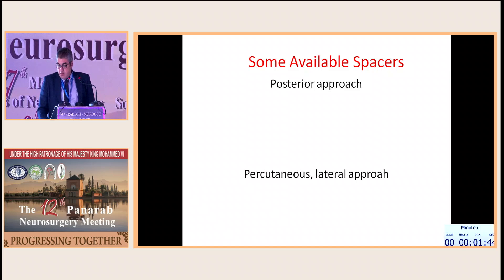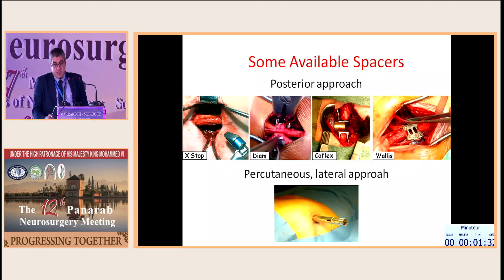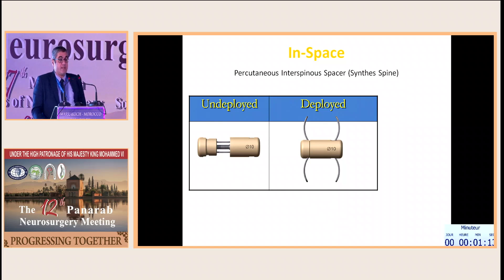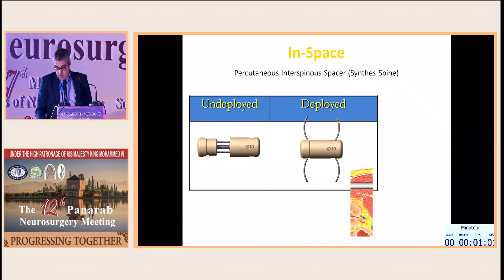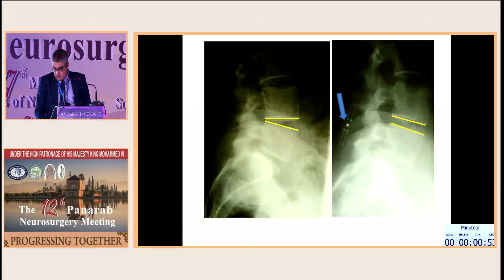We have many spacers available. Some are placed through an open posterior approach, such as the X-Stop, the DiAM, the Puflex, and the Wallis, among many others. One percutaneous option called In-Space can be placed with local anesthesia in a 10-minute procedure. I have seen elderly patients who could not walk and were walking just 5 to 15 minutes post-procedure. Here is the post-operative result of the In-Space, showing restoration of the posterior disc space and unloading of the facet.